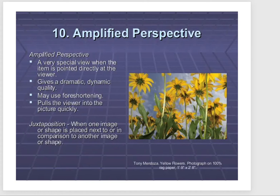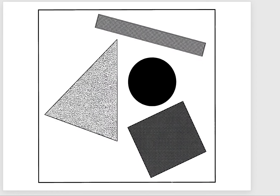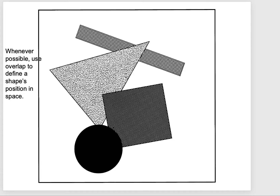Juxtaposition basically means taking one thing that is different from another and placing them in the same space — when one image or shape is placed next to or in comparison to another image or shape. In this case, what is juxtaposition? The very, very large flowers in the foreground juxtaposed against the very small one in the background, or juxtaposed against the sky with the clouds — those are two disparate things. This image is not terribly effective at telling us about space; it looks flat and the objects' relationship to each other is unintelligible. However, when you overlap, you get a suggestion of space and scale.